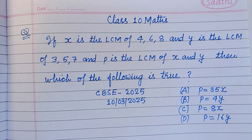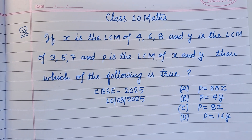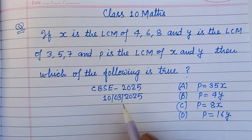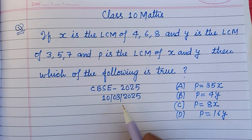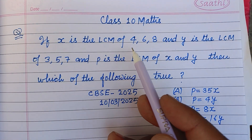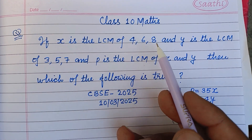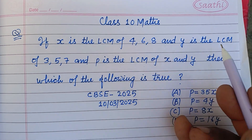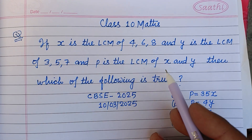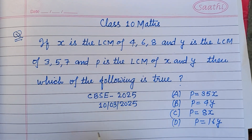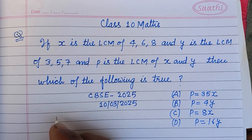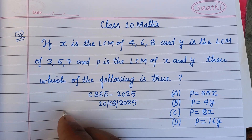Hello viewers, warm welcome to this YouTube channel. This is a question from CBSC board exam 2025. If x is the LCM of 4, 6, 8, and y is the LCM of 3, 5, 7, and p is the LCM of x and y.